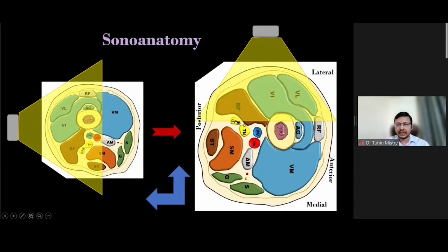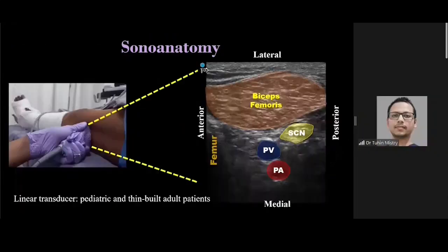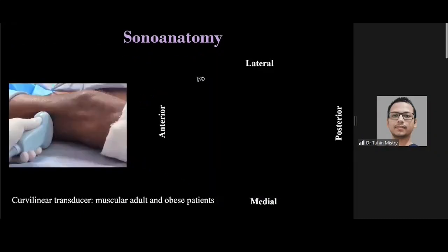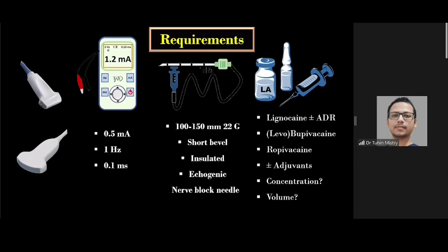In pediatric and thin-built adults, I use a linear transducer. In muscular adults and obese patients, I use a curvilinear transducer. If using a peripheral nerve stimulator alongside ultrasound, 0.5 mA current is sufficient for identification rather than localization. A 100 to 150 mm, 22-gauge short-bevel insulated echogenic nerve block needle is required. For local anesthetic, we use 0.1 to 0.2% ropivacaine or 0.25% bupivacaine for analgesia and 0.5% or above for anesthesia, along with 4 to 8 mg of dexamethasone, with a volume of 15 to 20 mL.